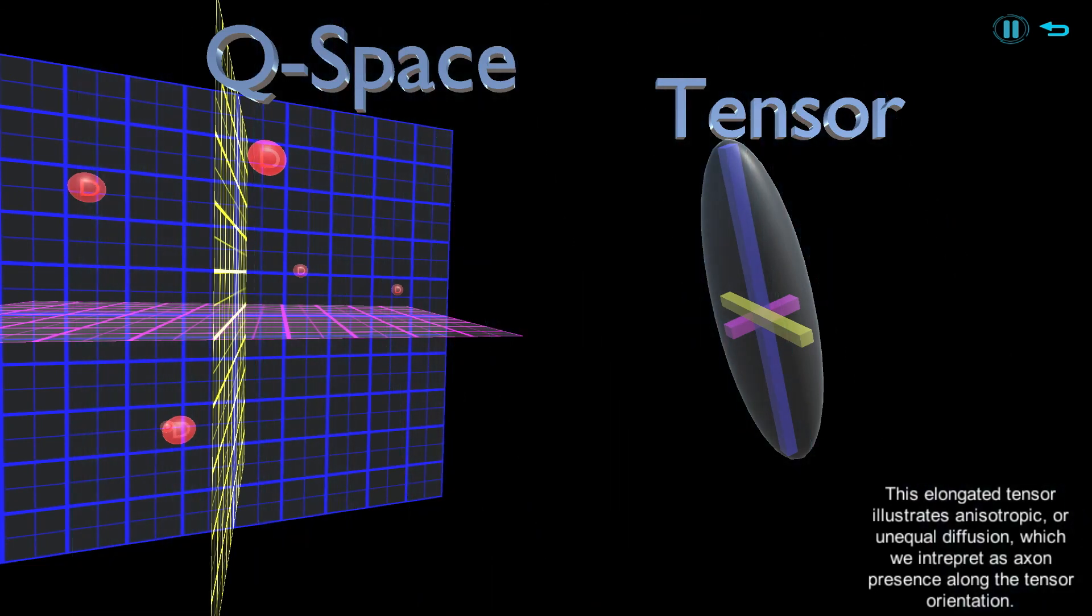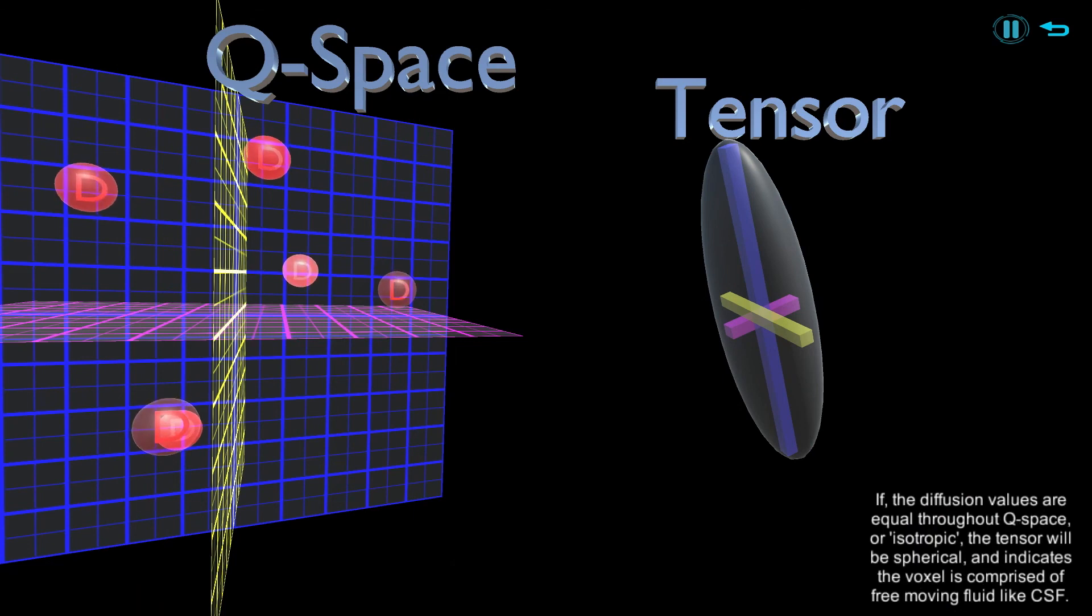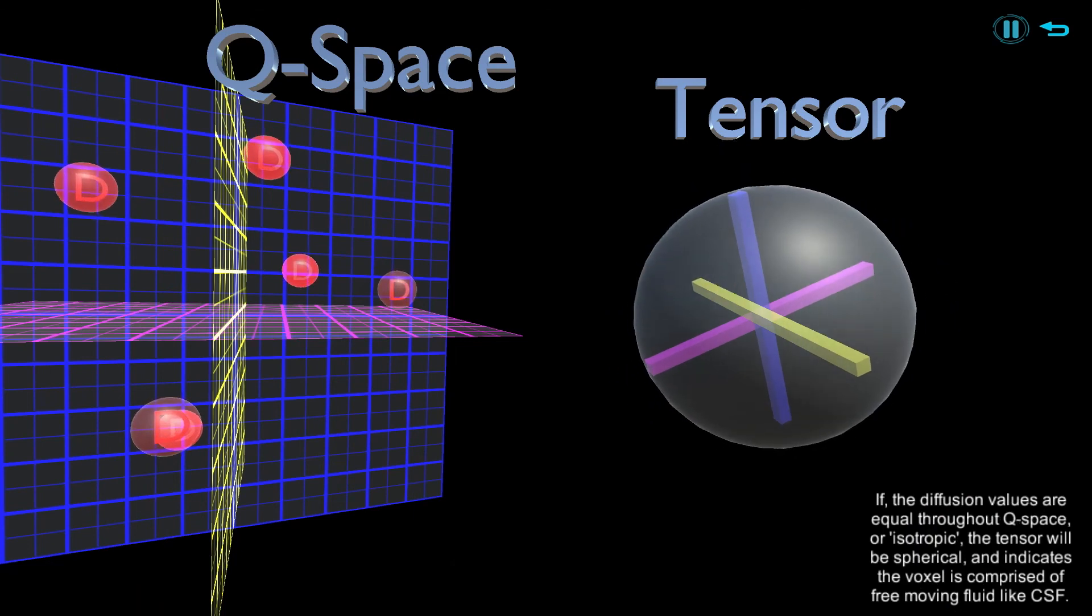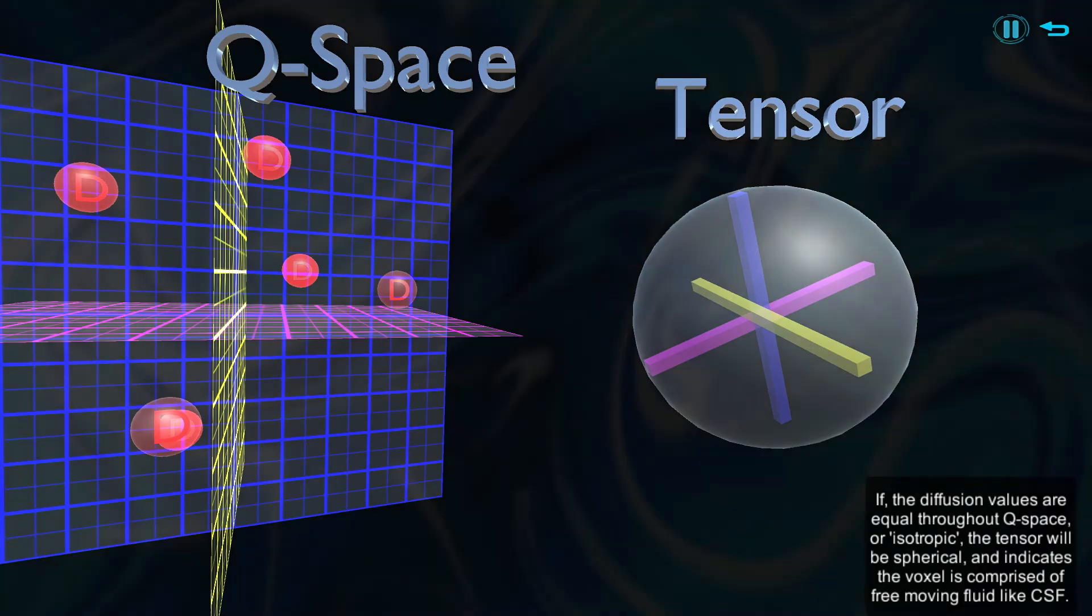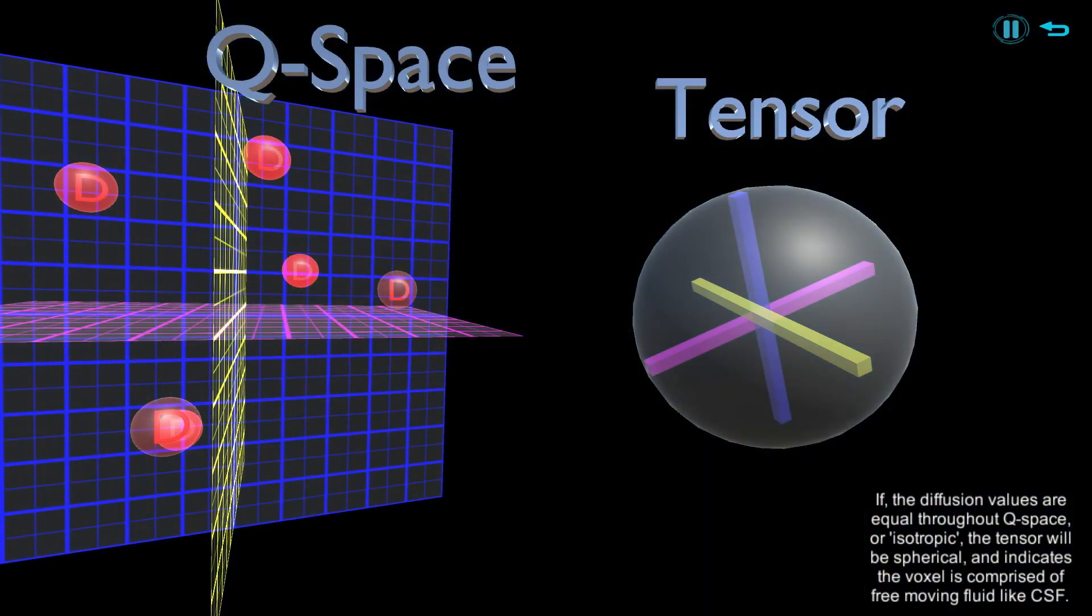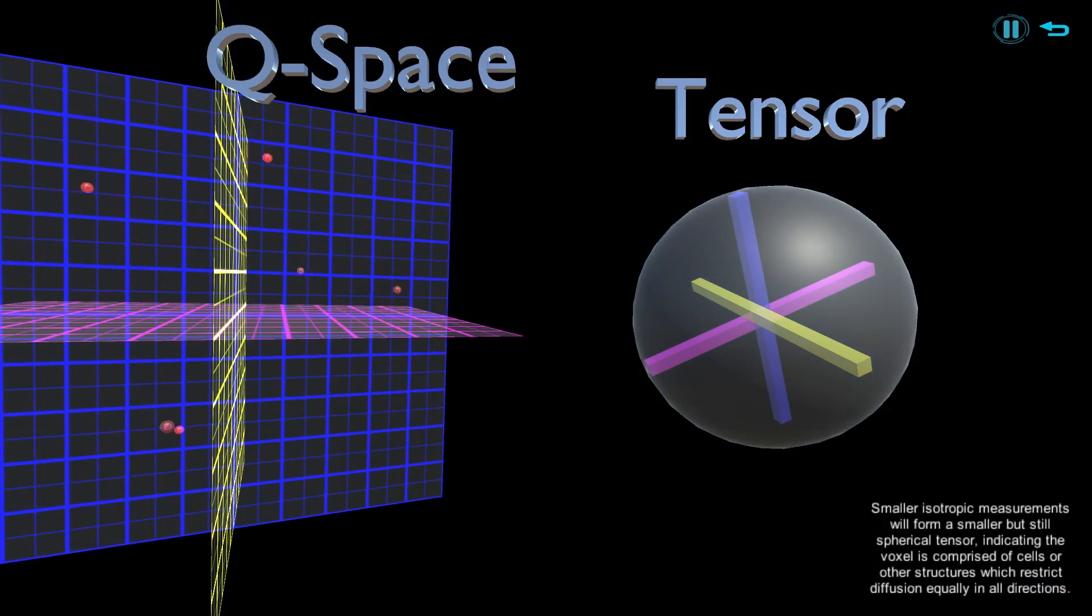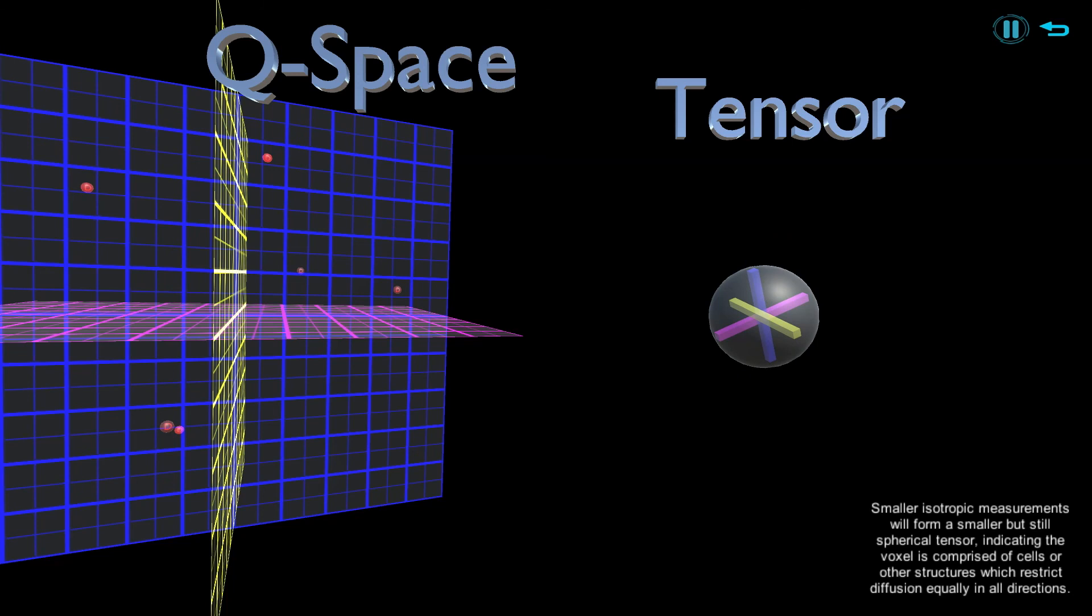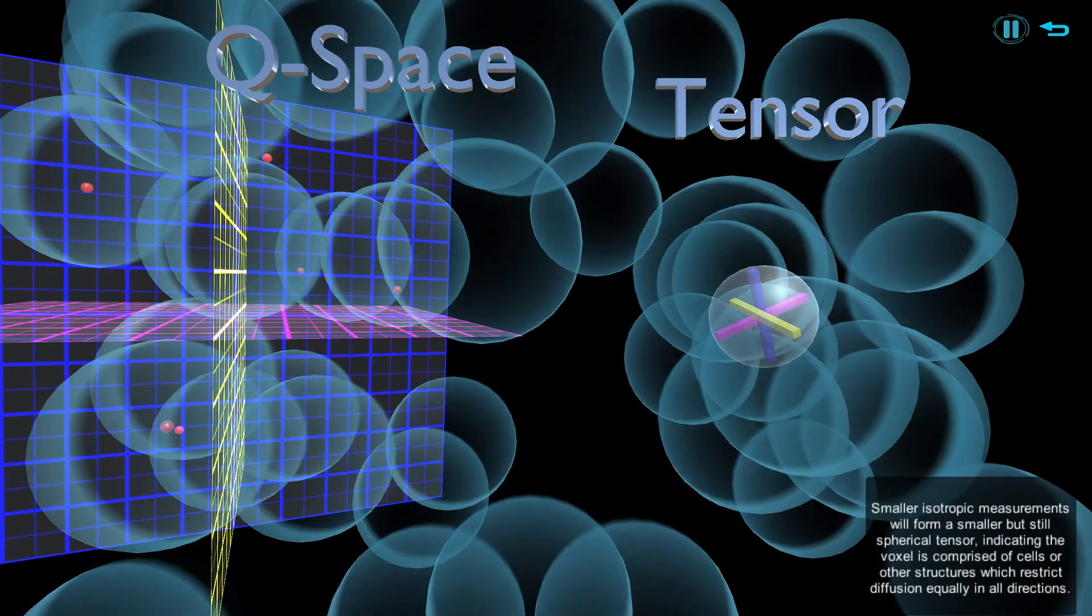If the diffusion values are equal throughout q-space, or isotropic, the tensor will be spherical and indicates the voxel is comprised of free-moving fluid like CSF. Smaller isotropic measurements will form a smaller but still spherical tensor, indicating the voxel is comprised of cells or other structures which restrict diffusion equally in all directions.